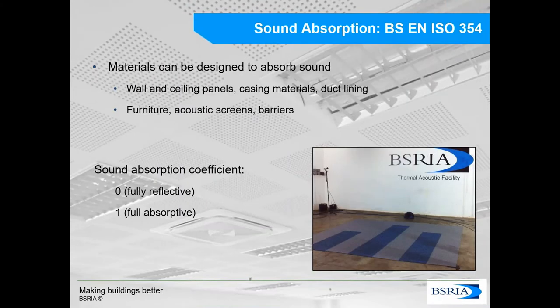The second type of measurement is sound absorption, determined in accordance with BS EN ISO 354. Different materials can be designed to absorb sound — wall and ceiling panels, duct liner materials, and screens and barriers used in the built environment. A sound absorption coefficient is determined, where zero is fully reflective and one is fully absorptive. An acoustic panel used on a wall would typically have a sound absorption coefficient of around 0.8 or 0.9.